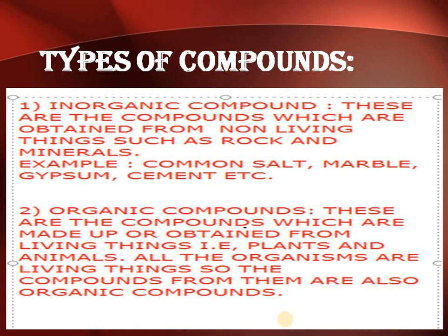Organic compounds are the compounds obtained from living things — that is, plants and animals. These are made up of things related to living organisms: animals, plants, humans. The waste products from humans or animals all come under living organisms. Good examples of organic compounds are urea, and organic compounds contain carbon, hydrogen, and oxygen. A good example is the sugar molecule.